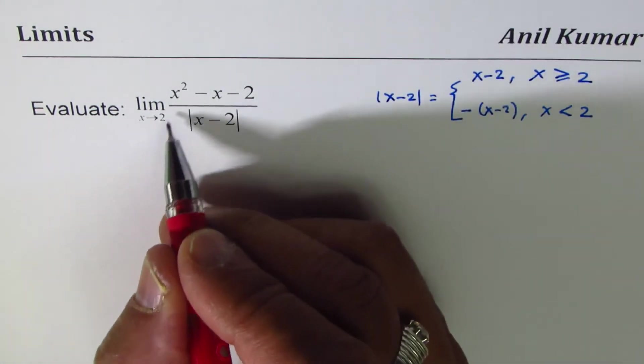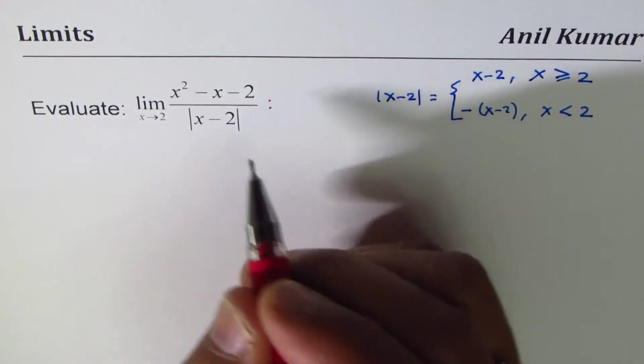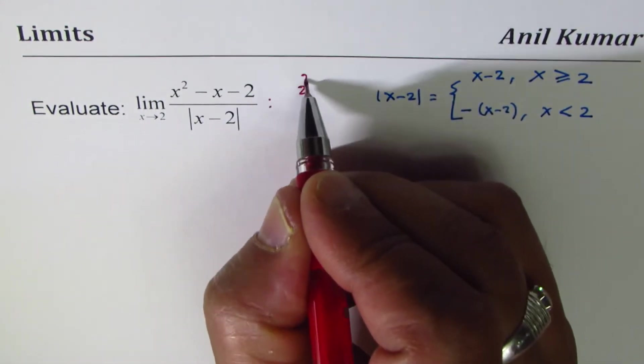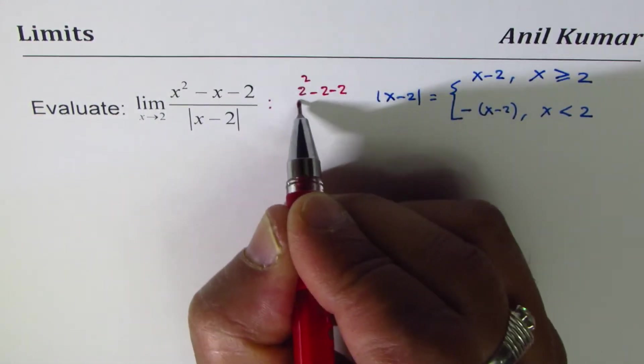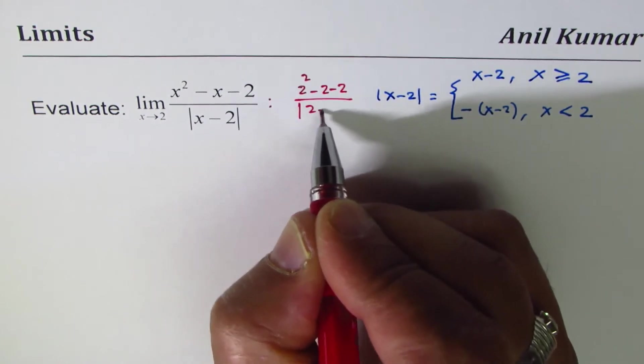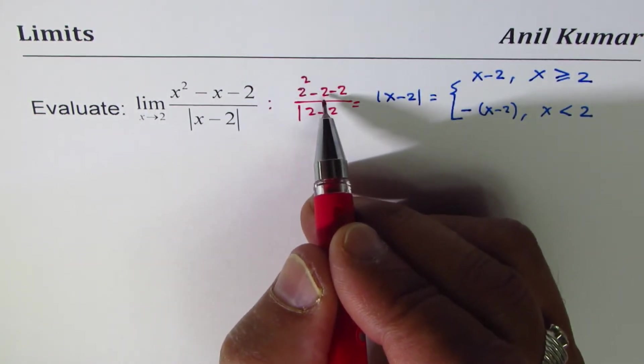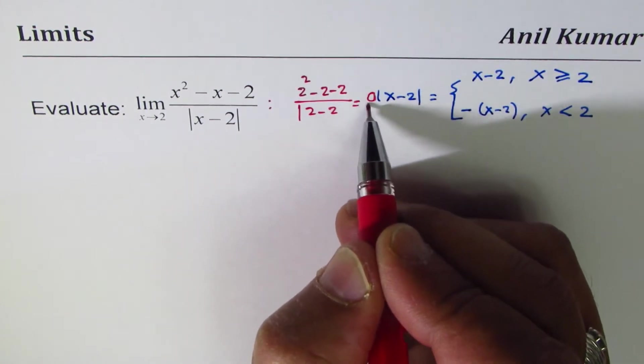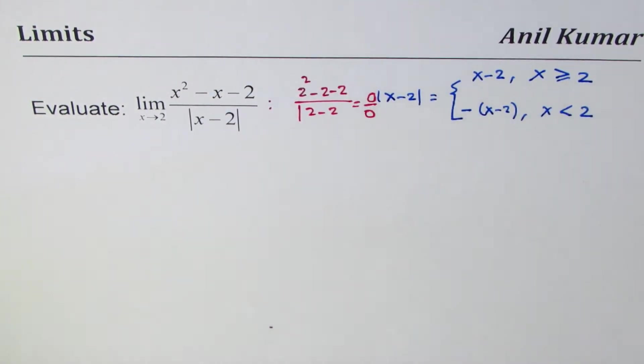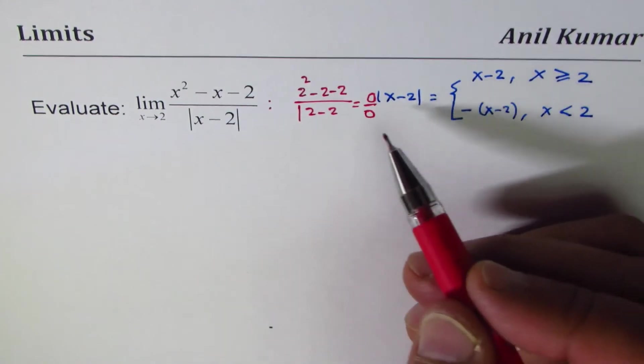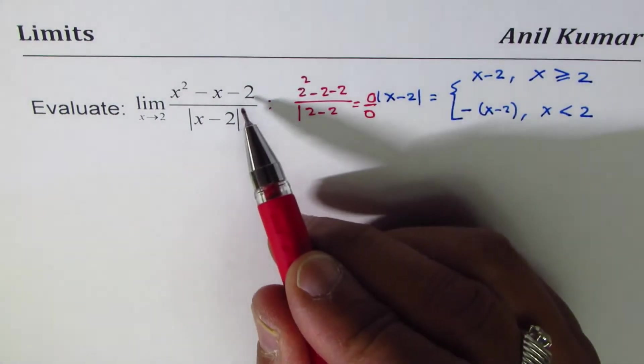If I substitute 2, I get 2 squared minus 2 minus 2 divided by absolute value of 2 minus 2. That's 4 minus 2 is 2, 2 minus 2 is 0, so we get 0 over 0. This is an indeterminate form, which means there is a common factor in both numerator and denominator.